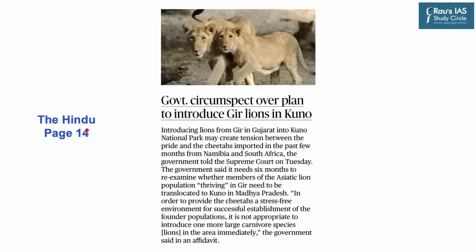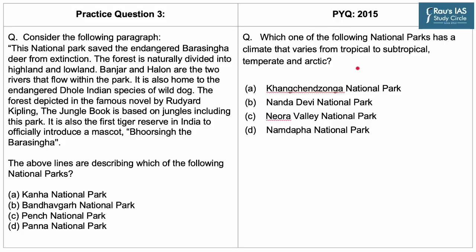Moving on to the third article of the day, which appeared on page 14 of The Hindu newspaper. The article reports that the government is re-examining its proposal to move Asiatic lions from Gir in Gujarat to Kuno National Park in Madhya Pradesh, so as to provide the cheetahs in Kuno National Park a stress-free environment. Protected areas like national parks and wildlife sanctuaries, their flora, fauna, climatic conditions, and geographical locations are important from a prelims point of view, as shown in the 2015 PYQ on varied climatic conditions of a national park. Here is practice question number 3.